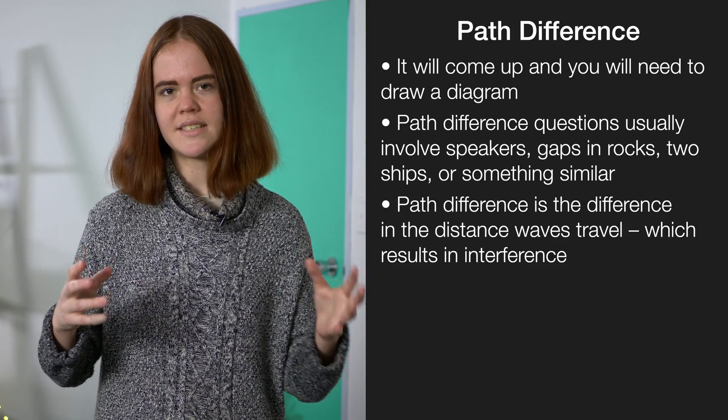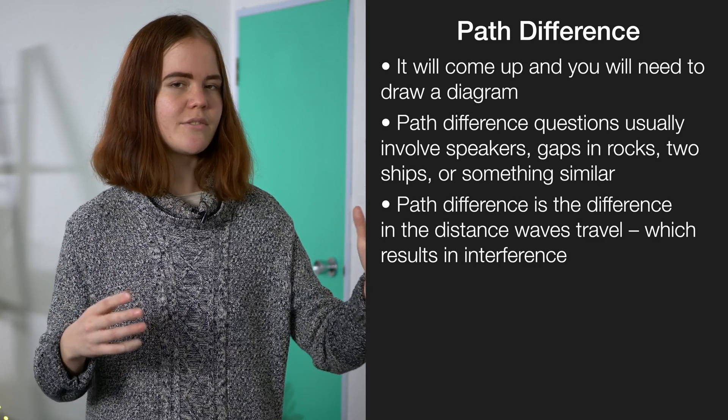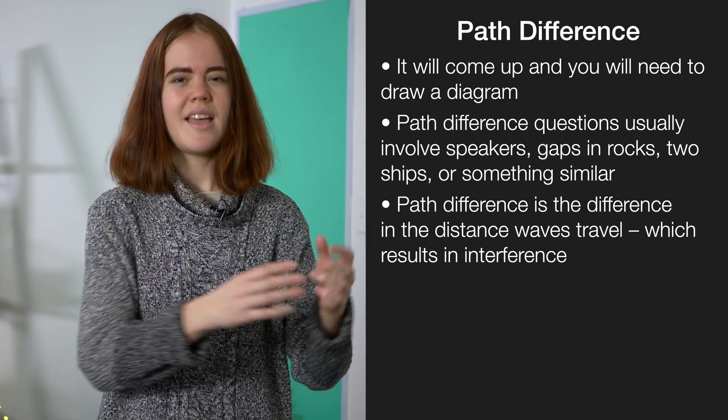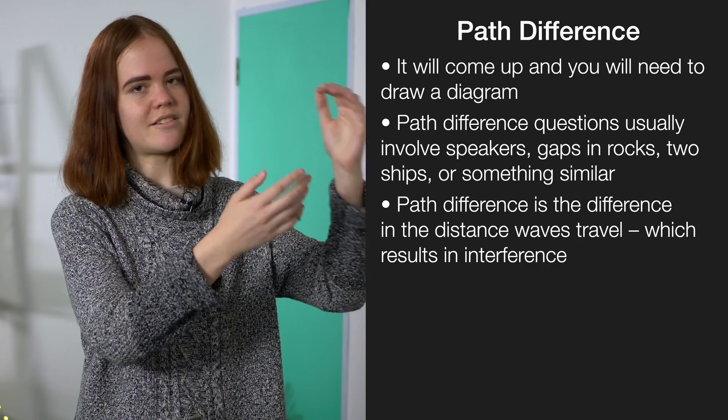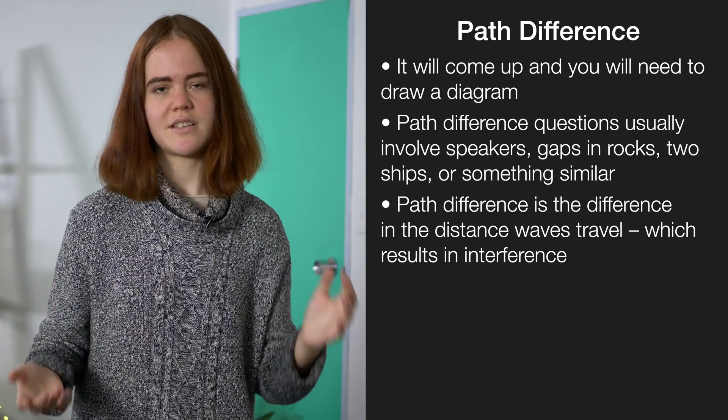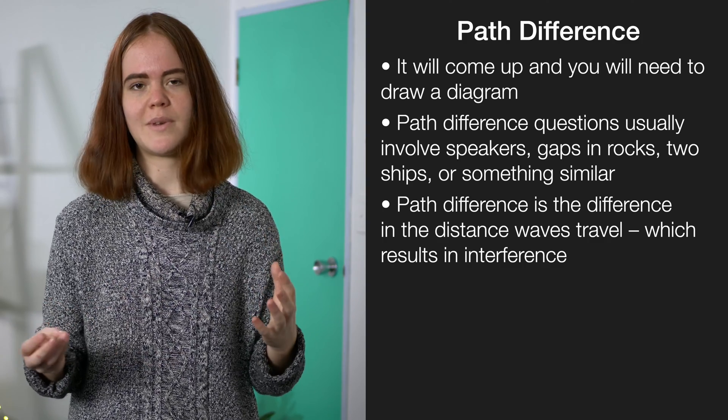So the idea is that path difference is how much further one wave has travelled than the other to get to that spot. And this leads to interference. Either constructive interference, where the two waves are building on top of each other and making a bigger wave, or destructive interference, where they're cancelling each other out and you get no movement at all.